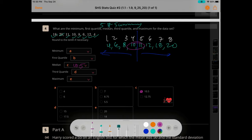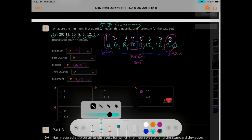So median is 10.5, your minimum is 4, your max is 20. Okay, so remember the quartiles.